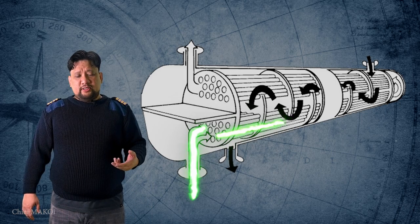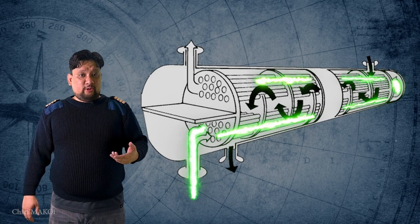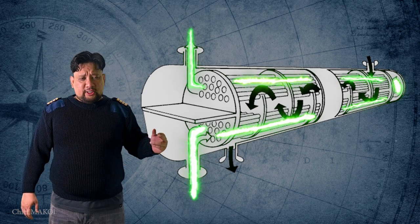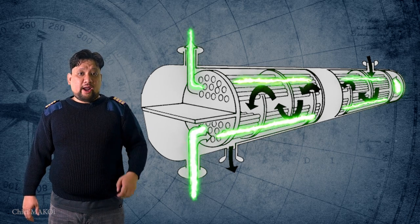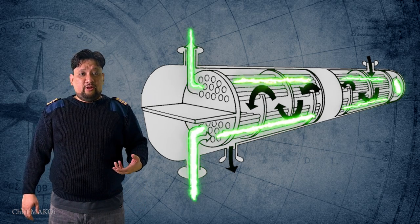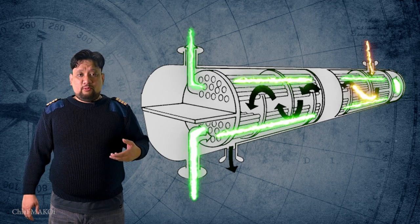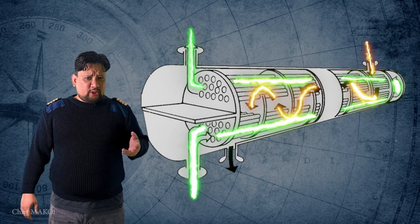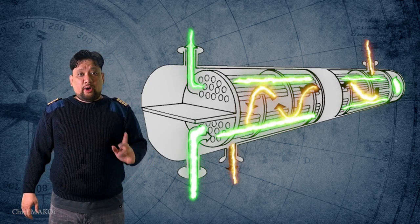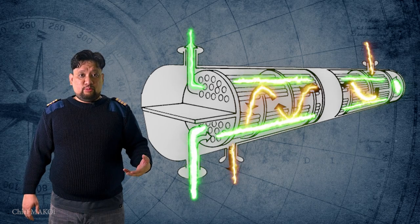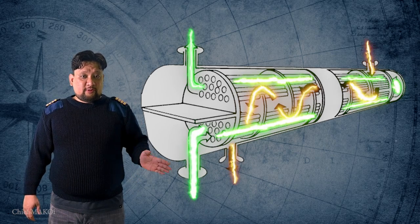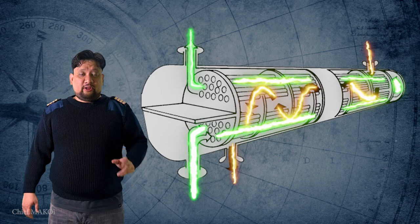In tube type coolers, the seawater being the fluid used as coolant passes through a set of tubes usually made of brass. The hotter fluid, usually jacket water or lubricating oil, enters the cooler through the shell where it comes into contact with the tubes and thereby transfers heat to the metal by conduction.